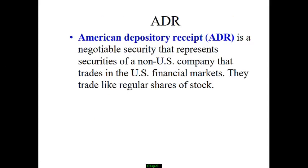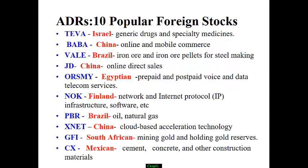A lot of foreign companies come to the US to sell stock and raise money. The format is called ADR, American Depository Receipt. For investors in the United States, they are able to buy ADRs using US dollars. These ADRs behave and trade like a regular stock — they pay dividends and trade at regular hours. Here are a list of 10 ADRs; you may have seen those names before. So if you're considering investing in foreign companies, ADRs is one choice.